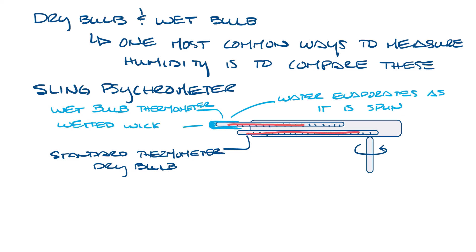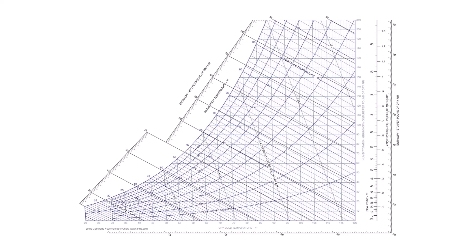If you know the wet and dry bulb temperatures, you can use a psychrometric chart to determine the humidity. So let's move this up and look at a psychrometric chart.